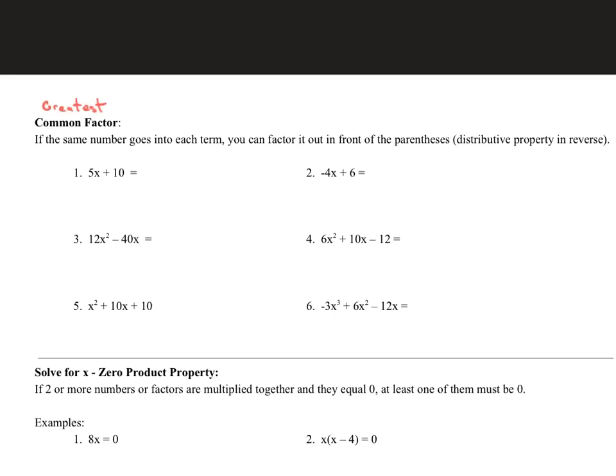And so what happens there is that if you have the same number that goes into each term, then you can factor it out and put it out front of the parentheses. Really what this is, we have to remember that this is just the distributive property in reverse. Because we've all practiced the distributive property quite a bit. So now you're just reversing it, undoing it.